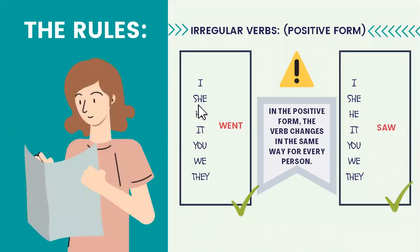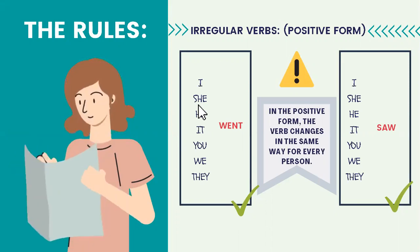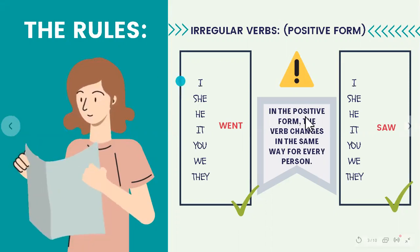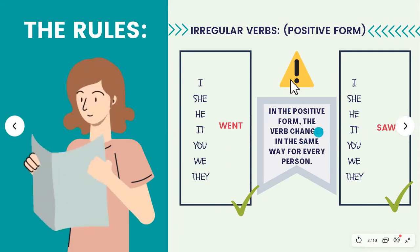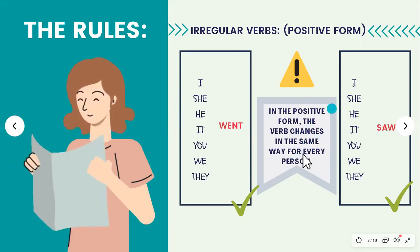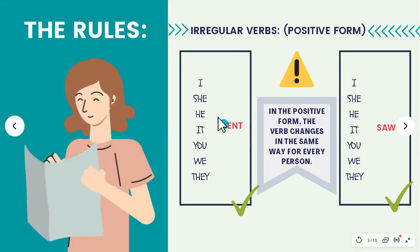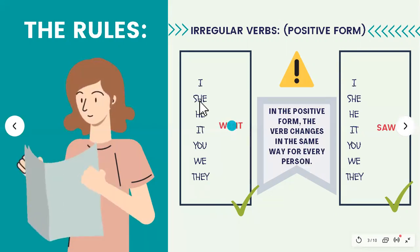But, talking about the form, we need to know this. In the positive form, as we talked just some seconds ago, they can change completely or they can change just a little bit. La forma irregular en pasado, en las oraciones positivas, siempre va a ser la misma para todas las personas gramaticales. Entonces, I went, she went, he went, it went, you went, we went, they went.